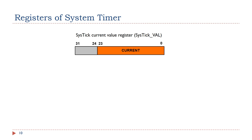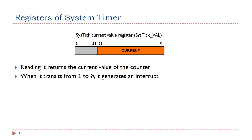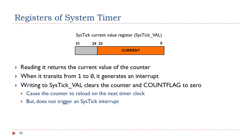Here is the current value register. Reading this register returns the value of the counter at the time the register is accessed. When the counter makes a transition from 1 to 0, the system timer generates a SysTick interrupt. Writing any value to the current value register clears this register and also clears the count flag bit in the control and status register. This causes the system timer to reload from the reload value register on the next timer clock. Writing to the current value register does not trigger SysTick interrupts.